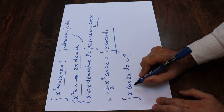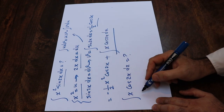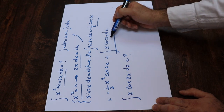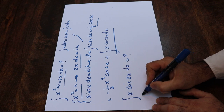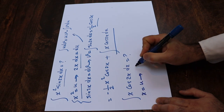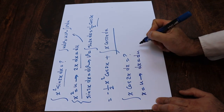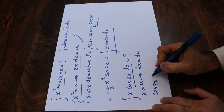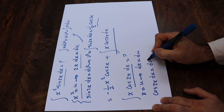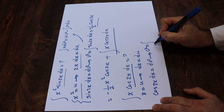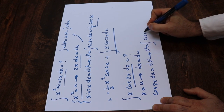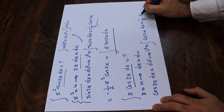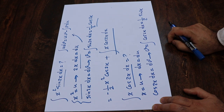So here, again, the same approach — you need to define u and dv and then use the formula. If you define x as u, then dx equals du. And let's define cosine(2x) dx as dv, therefore v will be equal to the integral of cosine(2x) dx, which equals 1/2 sine(2x).